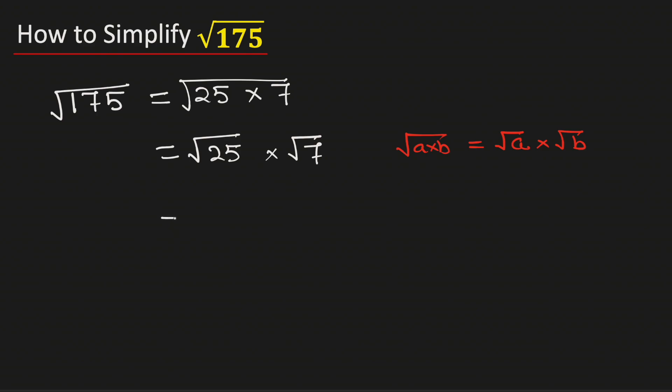Now we know that root 25 is equal to 5, and square root of 7 cannot be simplified further. Multiplying, we get 5 root 7.